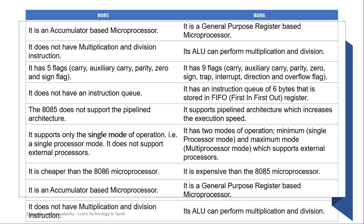This concludes the differences between 8085 and 8086. We have covered the basics of microprocessors, including different types of architecture, RISC/CISC differences, the 8085 processor, and the 8086 with its 16-bit processing capabilities.